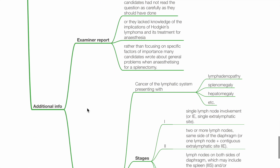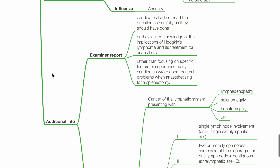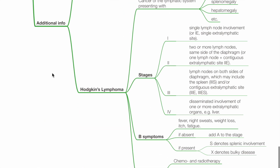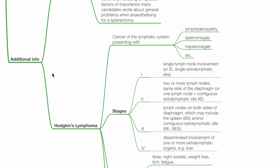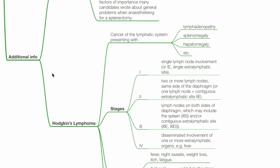Additional information — examiner report: Candidates had not read the question carefully. They may lack knowledge on the implications of Hodgkin's lymphoma and its treatment for anesthesia. Rather than focusing on specific factors of importance, many candidates wrote about general problems when anesthetizing for a splenectomy. Hodgkin's lymphoma is a cancer of the lymphatic system and presents with lymphadenopathy, splenomegaly, hepatomegaly, etc.